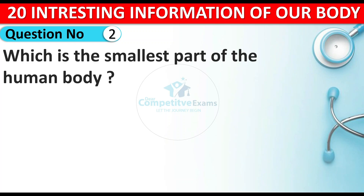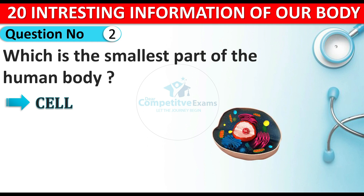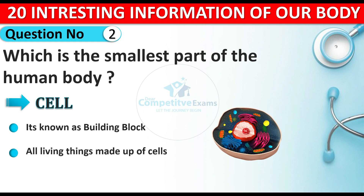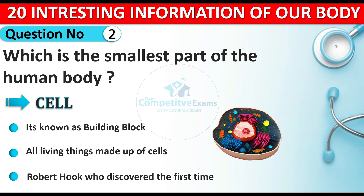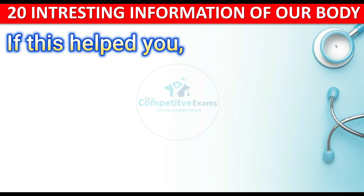Which is the smallest part of the human body? The answer is the cell. The cell is known as the smallest part of our human body and also as the building block, because life starts with cells and all living things are made up of cells. The cell was first discovered by a scientist named Robert Hooke.